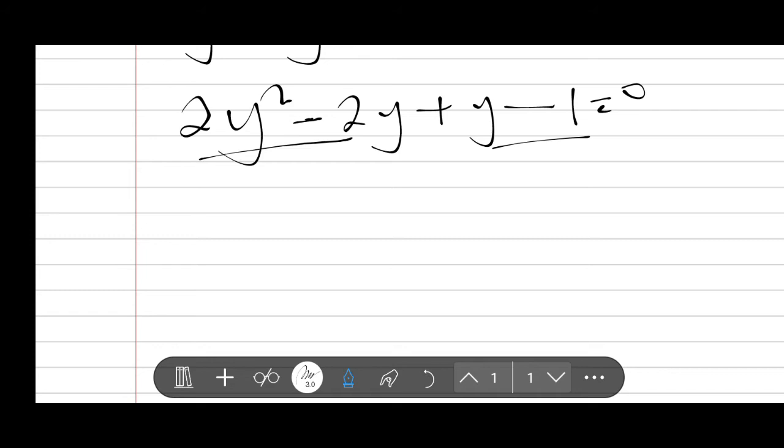So what is the common factor in 2y squared minus 2y? The common factor is 2y. You open bracket, 2y into 2y squared, you remain with y. Minus 2y into 2, you remain with 1. You close bracket.